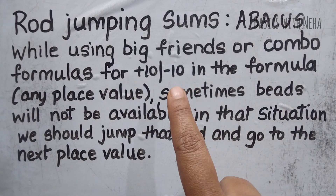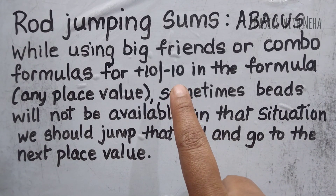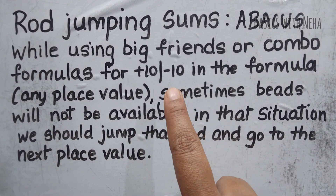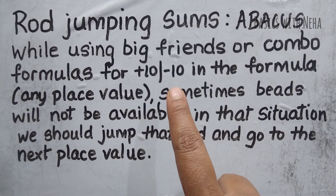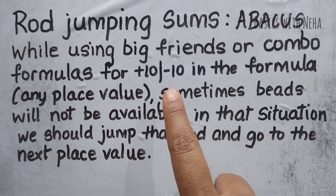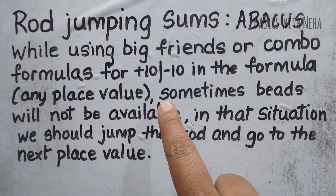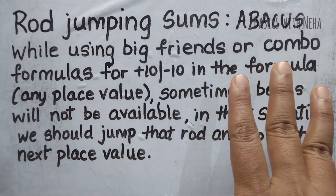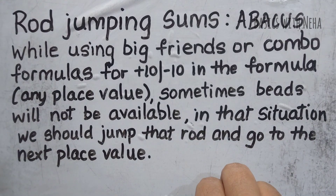If you are still not aware of the formulas in Abacus, I would want you to go to the description box. Before watching this video, do watch that video wherein I have explained all the 34 formulas, how to remember them easily without even memorizing them. Then come back to this video and watch it without skipping so that you will understand the concept of rod jumping completely.